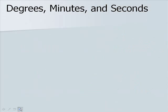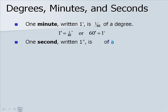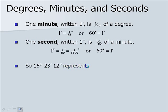Now let's look at degrees, minutes, and seconds. One minute, written with a single dash, is 1/60th of a degree, or 60 minutes equals 1 degree. One second, written with two dashes, is 1/60th of a minute, which is 1/3600th of a degree, or 60 seconds equals 1 minute. So the following would be written as 15 degrees, 23 minutes, and 12 seconds.